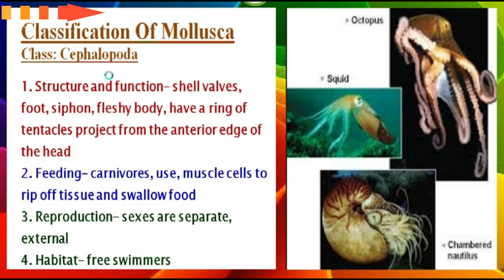The next class is Class Cephalopoda. Their structure and function includes shell valves, a foot, siphon, and fleshy body. They have a ring of tentacles projecting from the anterior edge of the head. Their feeding mode is carnivorous — they use muscle cells to rip off tissue and swallow food. Reproduction is mostly with separate sexes and external. Their habitat is mostly as free swimmers. You can see a complete and clear example of this class here.